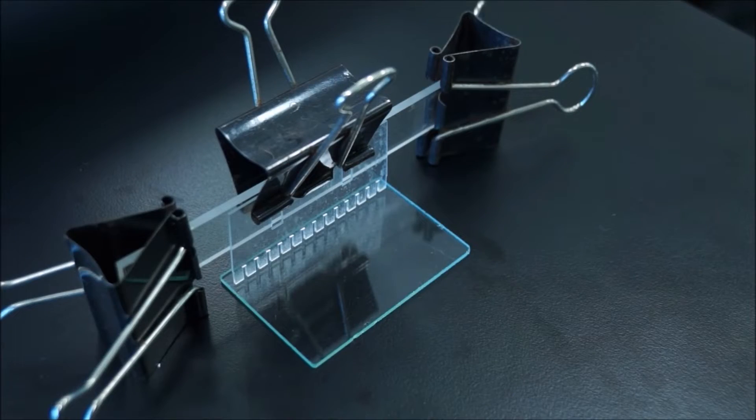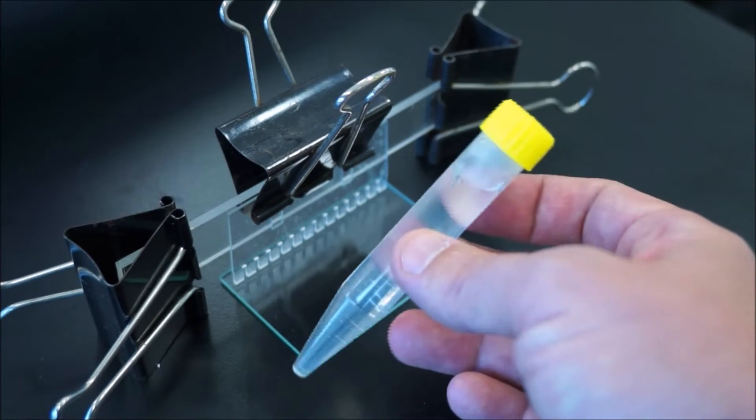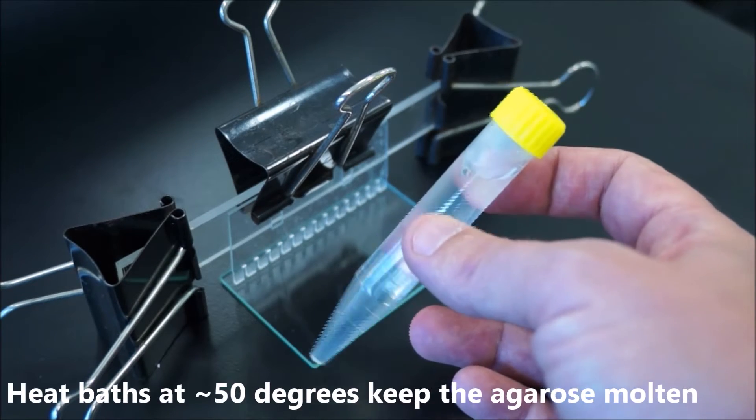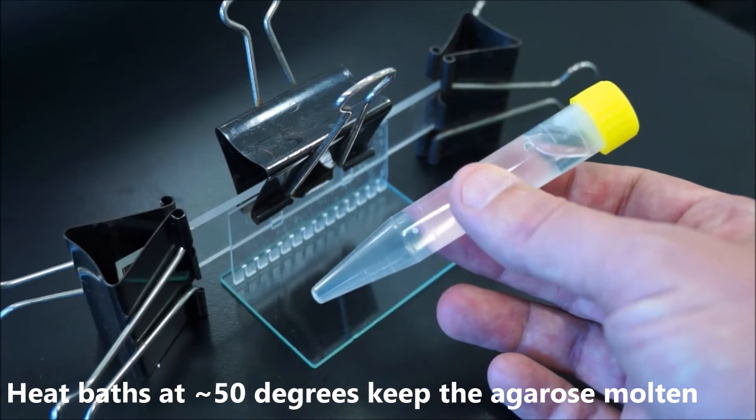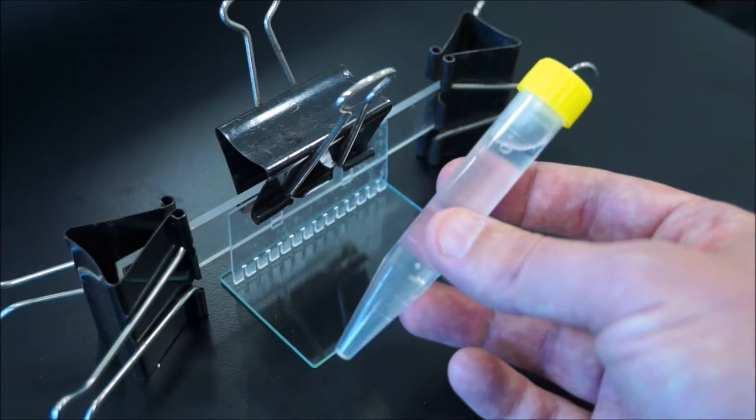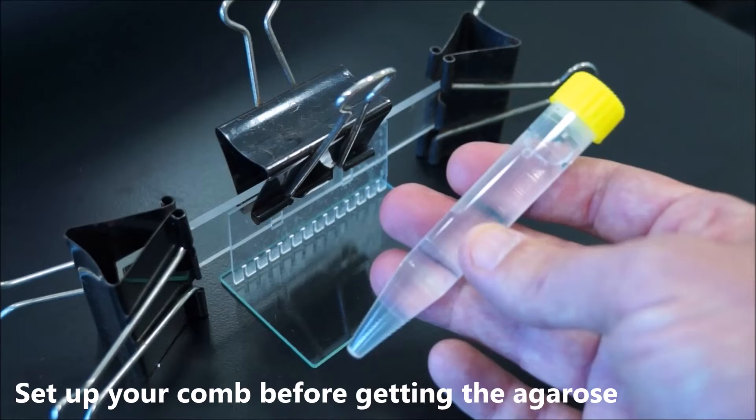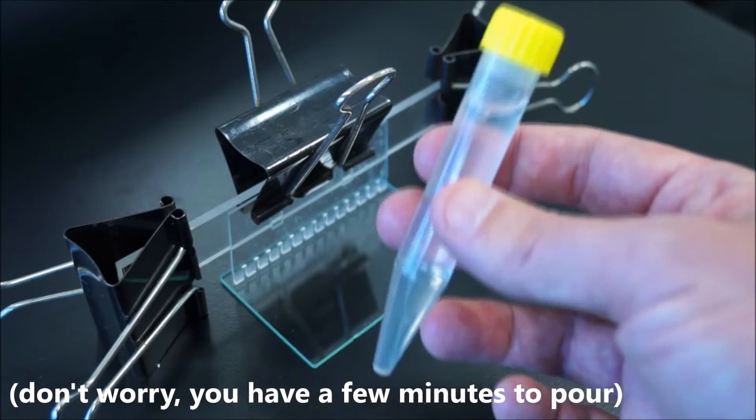The next thing to do is to find some molten agarose. They'll be in yellow capped tubes in a heat bath somewhere around the lab. There should be about 9 or 10 mils of molten agarose there. As it cools down it will solidify, so you have limited time to use this. Just be reasonably quick about it.